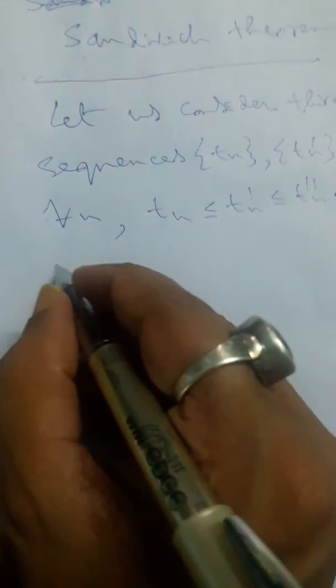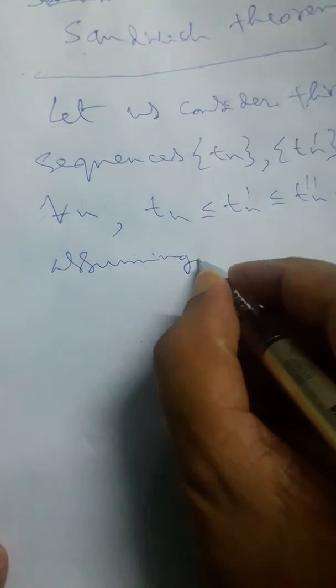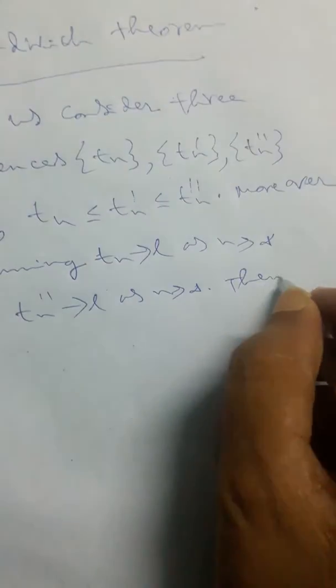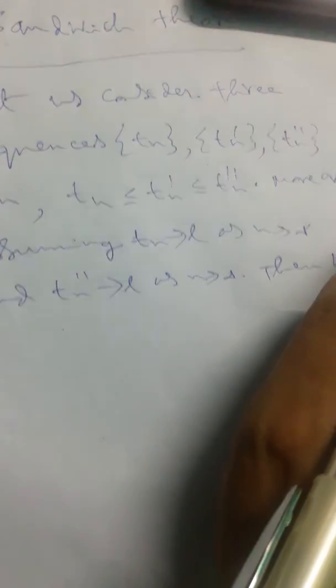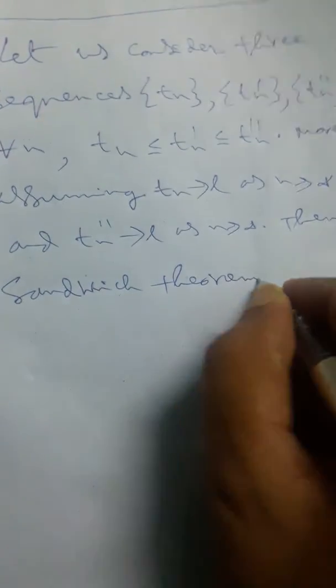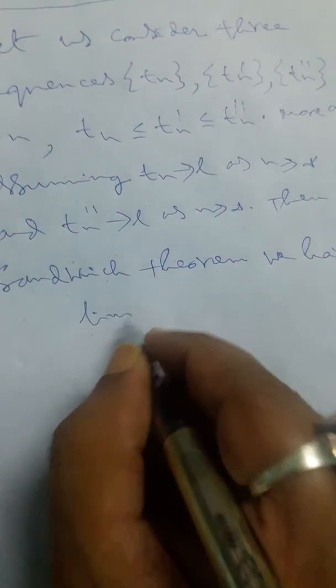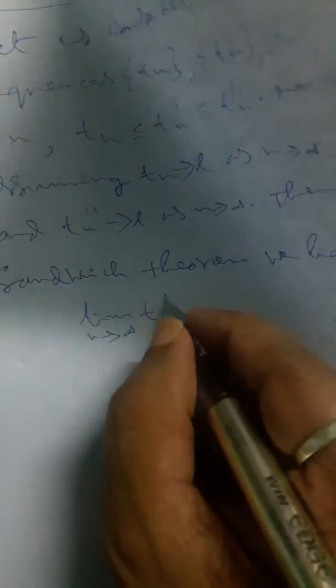Moreover, assuming tₙ tends to limit l as n tends to infinity, and t″ₙ tends to l as n tends to infinity. Then, by the Sandwich Theorem, we have that the limit as n tends to infinity of t′ₙ equals l.